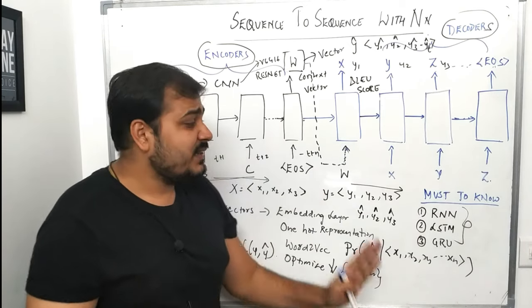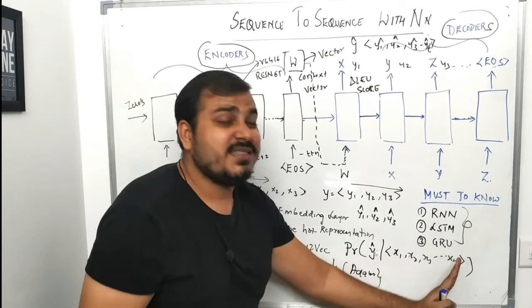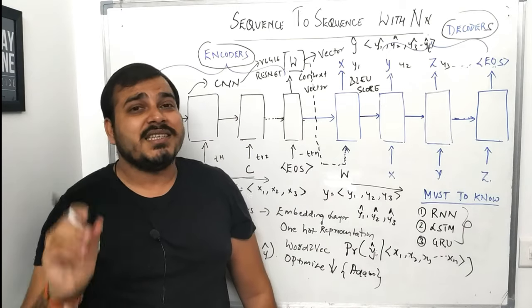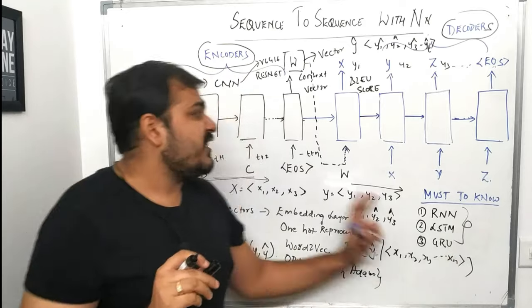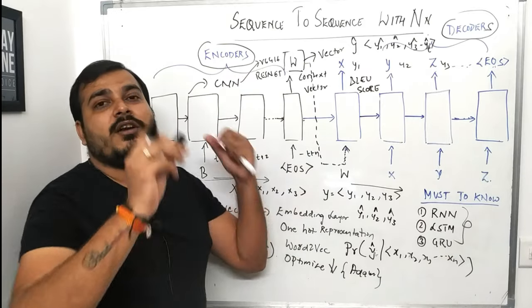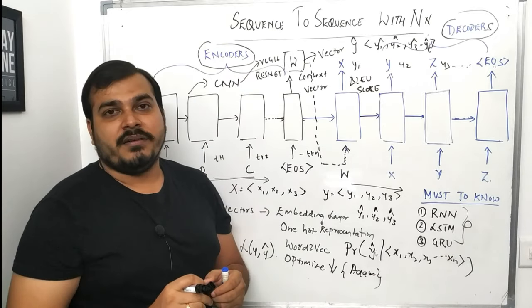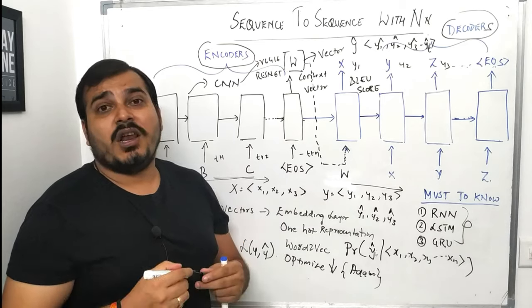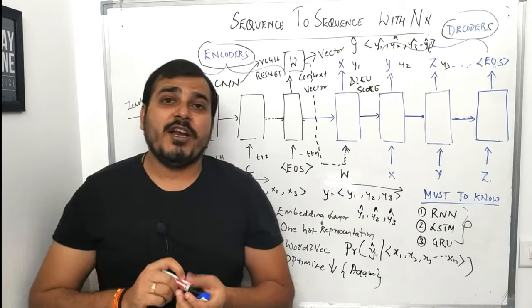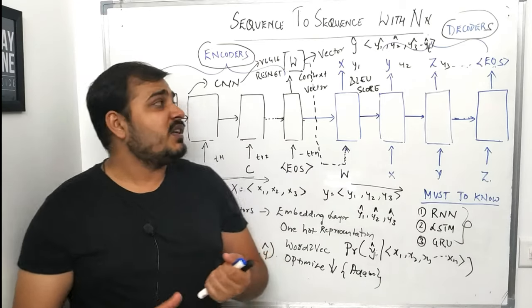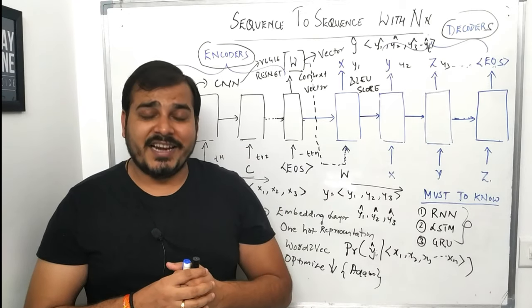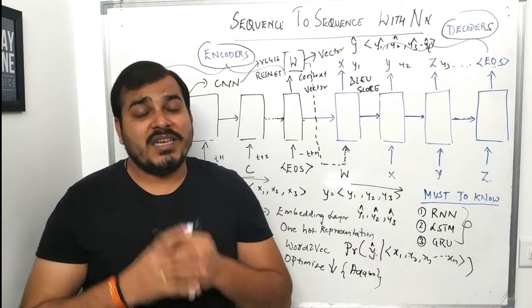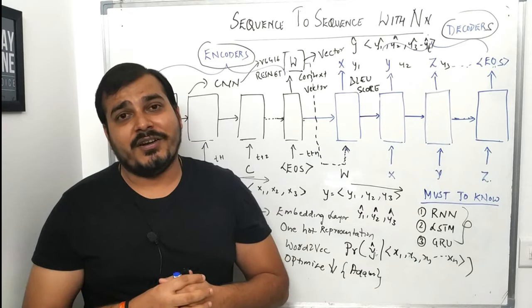Remember, the basic thing is to get your basics right — CNN, ANN, RNN, LSTM, GRU — and just by changing the architecture you will be able to do a whole lot of things. In the upcoming video we will be doing a practical session with respect to language translation. Please do subscribe to the channel. Thank you and bye bye.